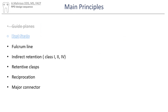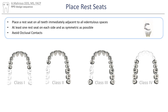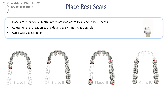Next, let's move on to rest seats. We will leave a link for a video on rest seats if you're not familiar with them. Like guide planes, rest seats are placed on the teeth adjacent to the edentulous space. Additionally, rest seats should be placed on both sides of the arch and as symmetrically as possible. This means that some rest seats are going to be placed on the dentate side of the arch, like in class two and class three cases.